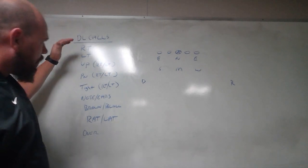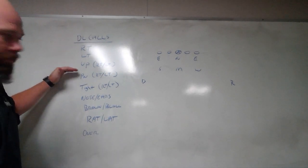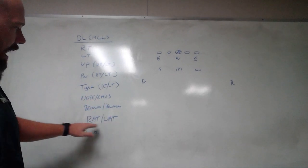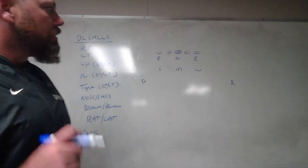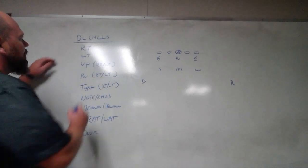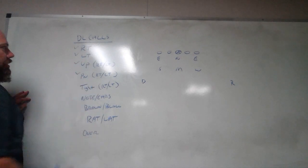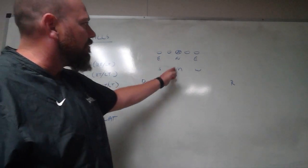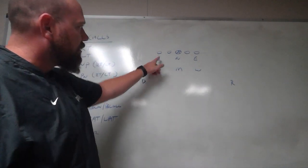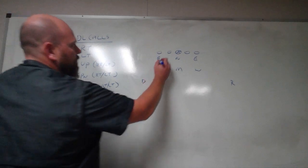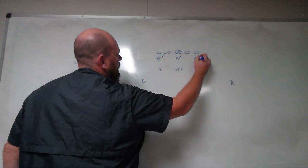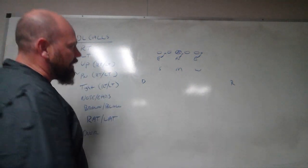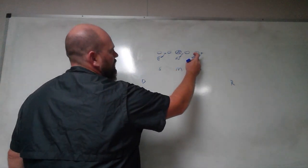Our defensive line calls are: Right, Left, Up, Pinch, Tight, Nose, Ears, Brown, Black, Rats, Lats, and Over. Yesterday we installed Right, Left, Up, and Pinch. For a Right call, the defensive end attacks the C-gap, so we want to make sure we get a little more width in our pre-alignment — maybe into a five technique if we don't have enough speed to set the edge.